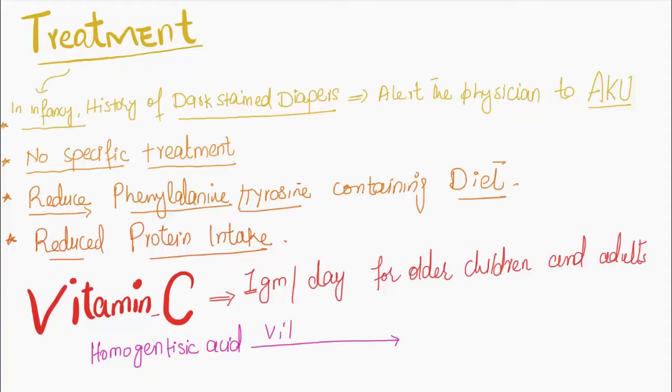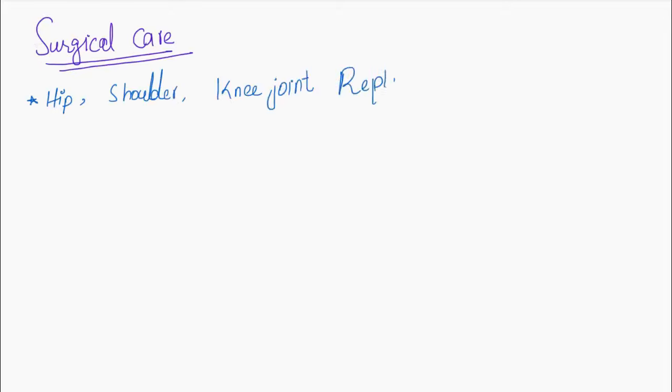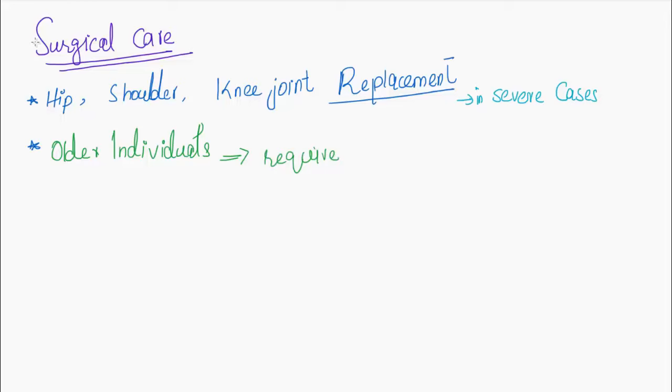Alkaptons are deposited in cartilages. Surgical care: Hip, shoulder, or knee joint replacement may be necessary in severe cases. In older individuals, it may require removal of lumbar discs with fusion.